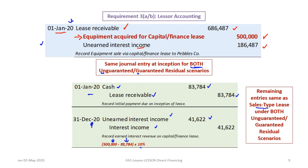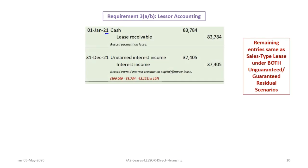These entries are the same whether it is a sales type lease and regardless of whether residuals are guaranteed or unguaranteed. In 2021, on January 1st, we again debit cash and credit lease receivable for the payment amount. We continue recording earned interest income on the financing lease: debit unearned interest income, credit interest income for $37,405. This is calculated as the $500,000 minus the first payment, minus the difference between the $41,622 interest and the $83,784 payment — that difference being the principal amortized — then multiplied by 10%. You can verify this figure on the amortization schedule.